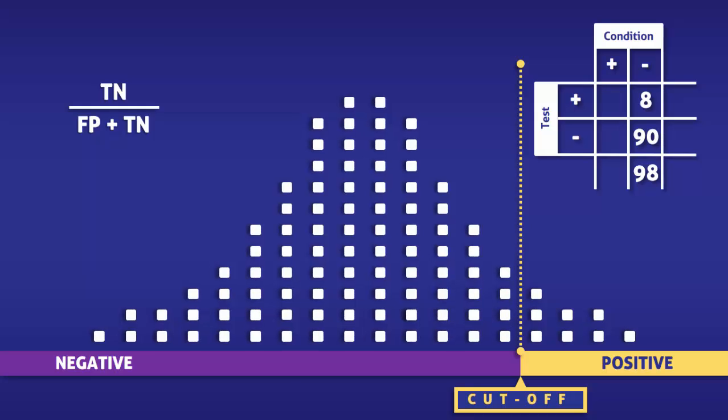Now all that remains is to enter the data into the equation. In doing so, we find that the specificity is 90 over 98, which is 92%.